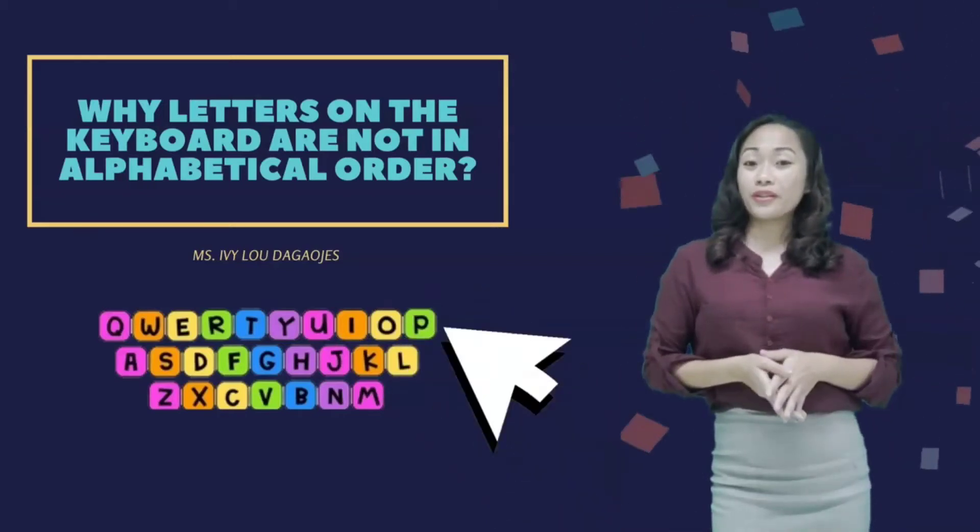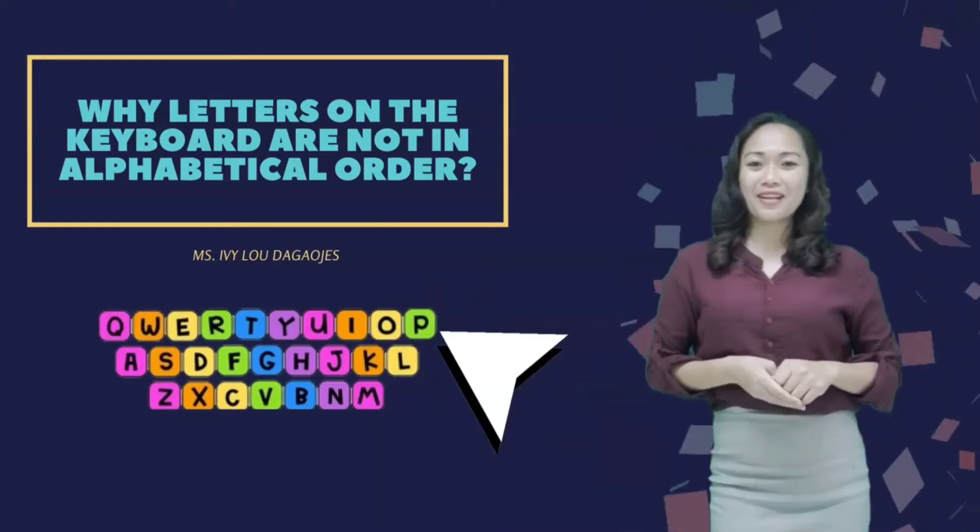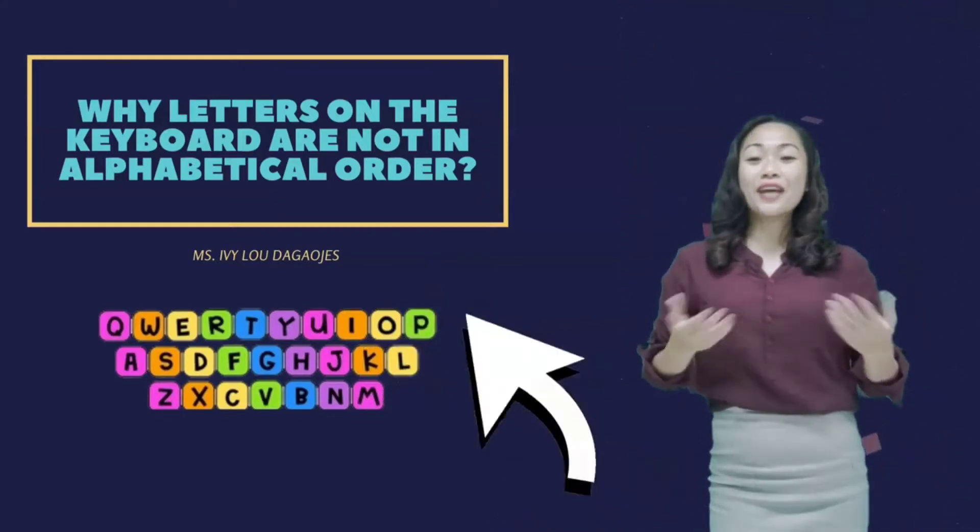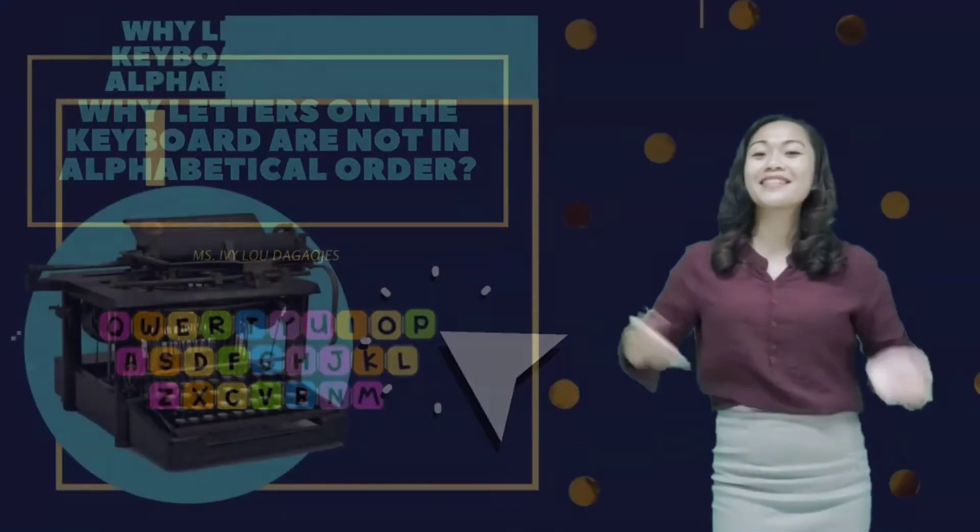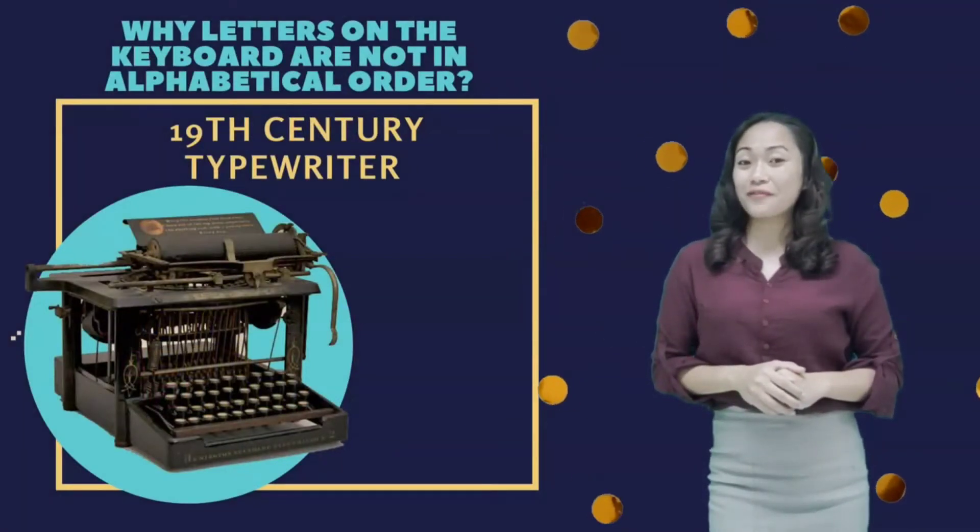Have you ever wondered why letters on any keyboard aren't arranged in alphabetical order? The location of the letters goes back to the 19th century typewriter, a machine for typing.